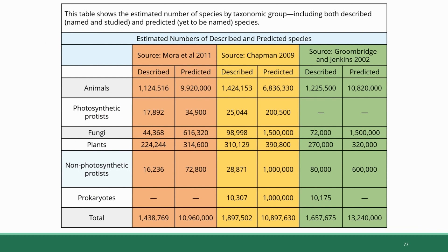The way that scientists make these predictions is by taking a group of organisms that has been very thoroughly studied, like insects, for example, and counting the number of species identified in different zones on Earth and then coming up with a ratio of how many species exist from zone to zone. They use that ratio to make predictions about how many species there are of other groups that haven't been as extensively studied. For example, over a million different animal species have been described, but different scientists estimate that somewhere between 6.8 and 10.8 million different animals are out there. So the bottom line is there's a lot of biodiversity out there that we know about, but also a lot that we don't know about because it hasn't been identified yet.